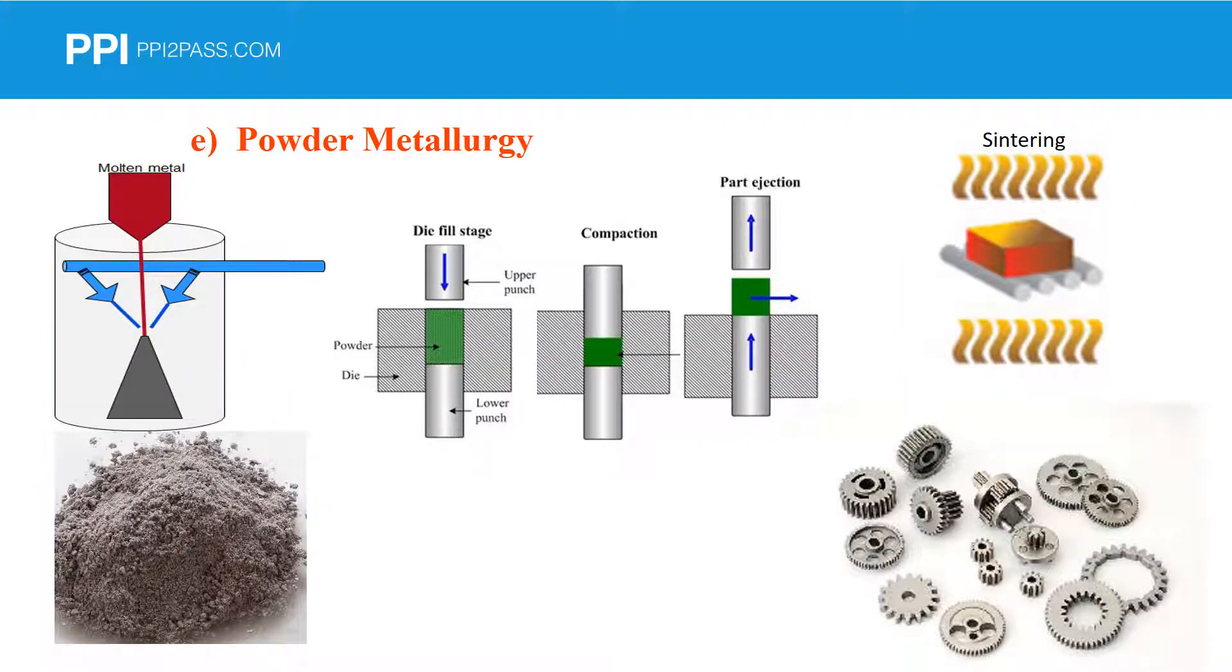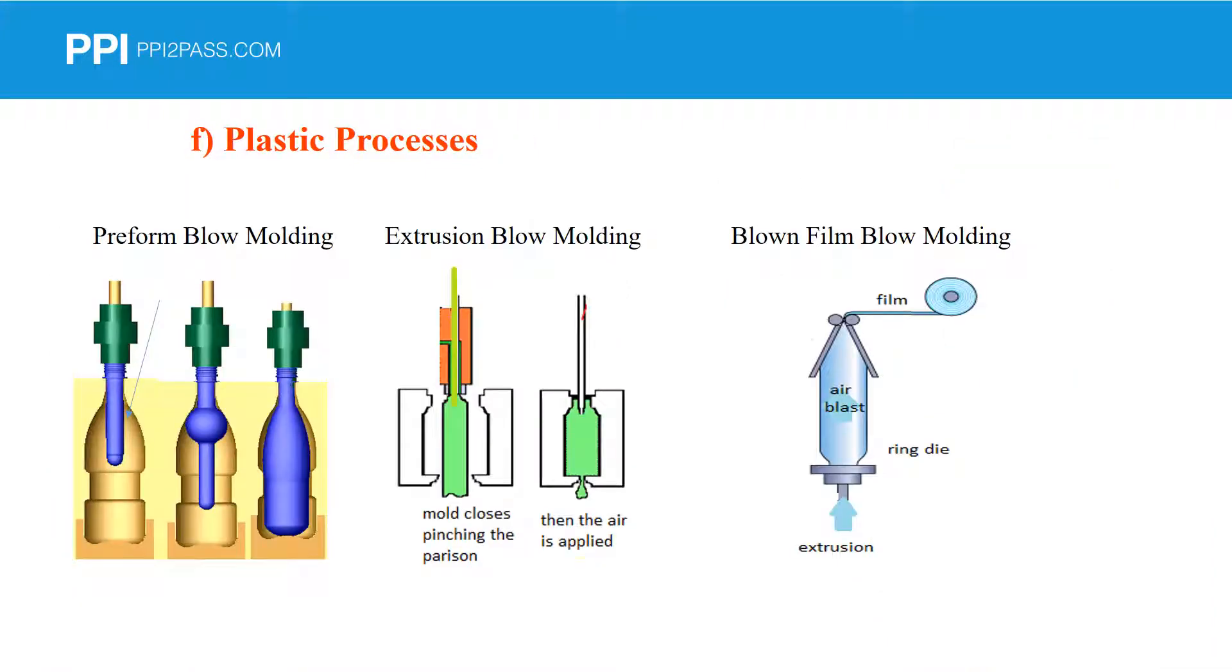We'll go into manufacturing processes, including making parts from powder metallurgy. And, of course, we'll get back to those plastics and plastic processes.